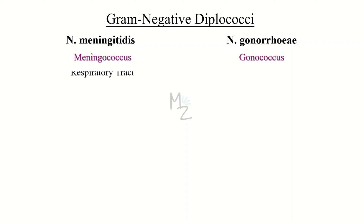Neisseria meningitis inhabits the respiratory tract, specifically the nasopharynx. Neisseria gonorrhea is found specifically in genital organs, but it can also be found in the anorectal region and nasopharynx.